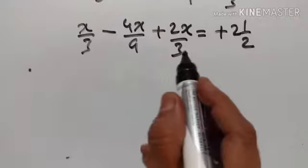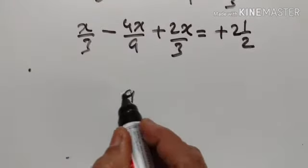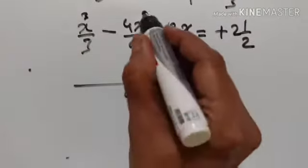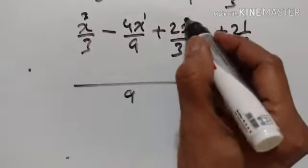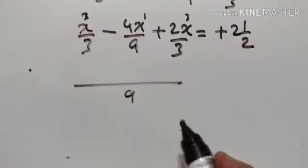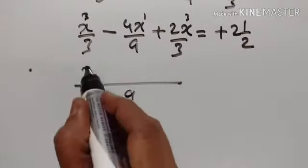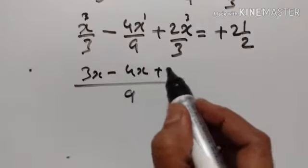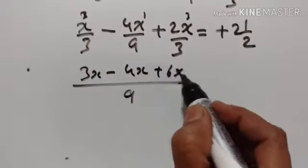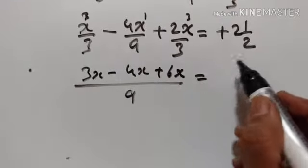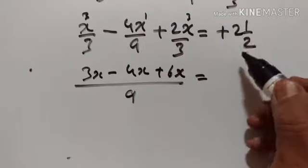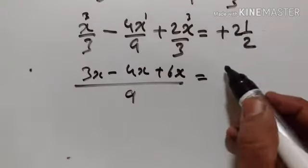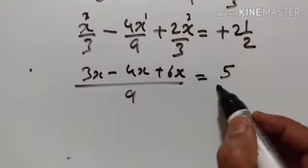The LCM of 3, 9, and 3 is equal to 9. 3 threes are 9, 9 ones are 9, 3 threes are 9. So 3x minus 4x plus 3 into 2x equals 6x. And 2 and a half equals 5 upon 2.